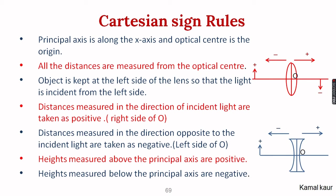The first rule is that the principal axis should always lie along the x-axis and the origin will be the optical center of the lens. For the convex lens, this will be the origin, and for the concave lens, this will be the origin. We need to measure all the distances from the origin, which is the optical center.